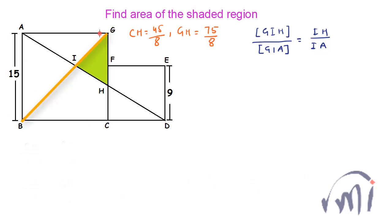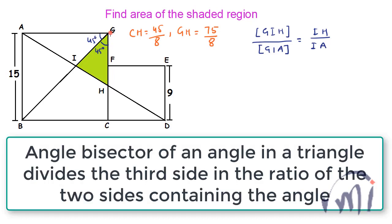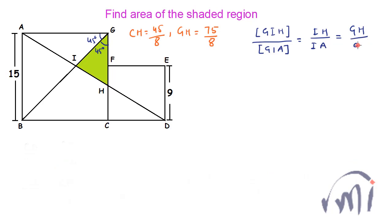Since GB is the diagonal of square AGCB, it is the angle bisector of angle AGC, making this angle 45 degrees and the adjacent angle also 45 degrees. Since line GI is the angle bisector of angle AGH in triangle AGH, by the angle bisector theorem the ratio of IH to IA equals the ratio of GH to GA.